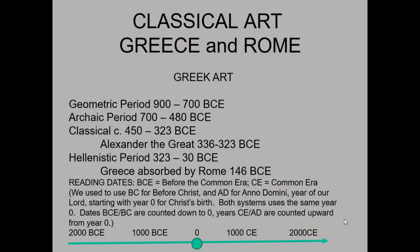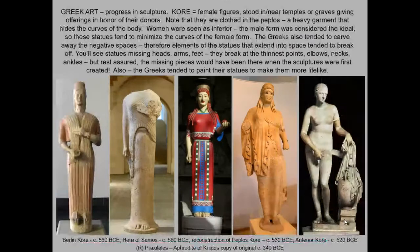Art History Survey 2 starts in the Renaissance. The Renaissance literally means rebirth — it is the rebirth of classical art. Classical for us means the art of Greece and Rome. We're bringing something back from the past, so you want to know a little about what that art was like.